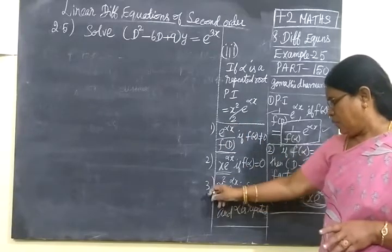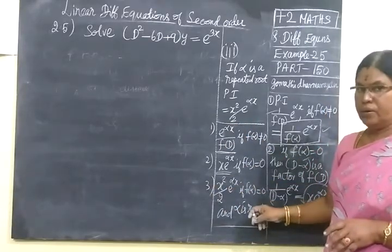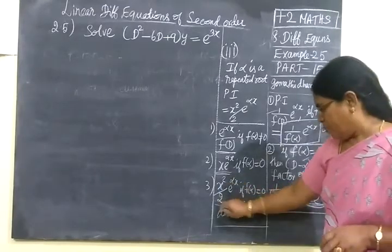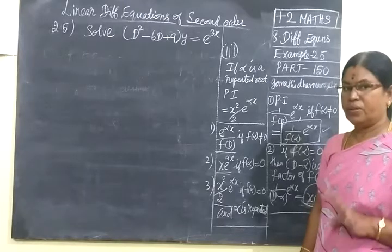Then third one, if alpha is repeated, if it comes twice, means x² by 2 e^(αx). That's all the difference.